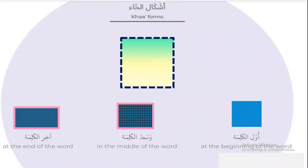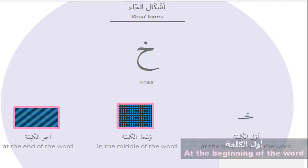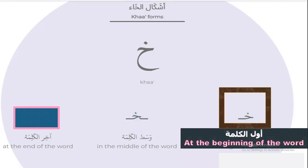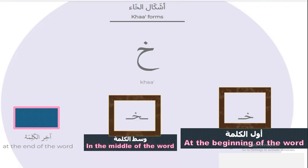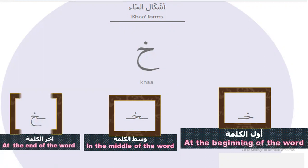The forms of Kha — ashkelul Kha. Kha has four forms. Number one: Kha as a standalone letter. Number two: Kha at the beginning of a word. Number three: Kha in the middle of a word. Number four: Kha at the end of the word.